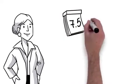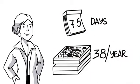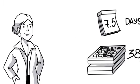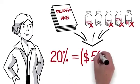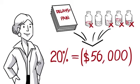Each cycle takes 7.5 days, and accounting for downtime, we can run 38 batches per year. Every time we lose 20% to reject, we lose $56,000.